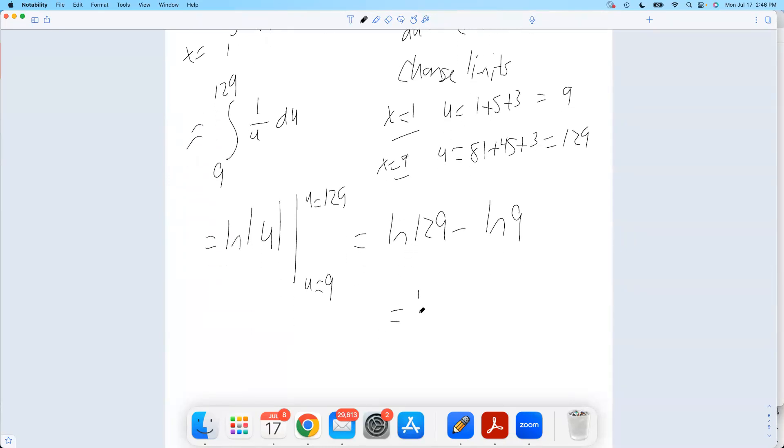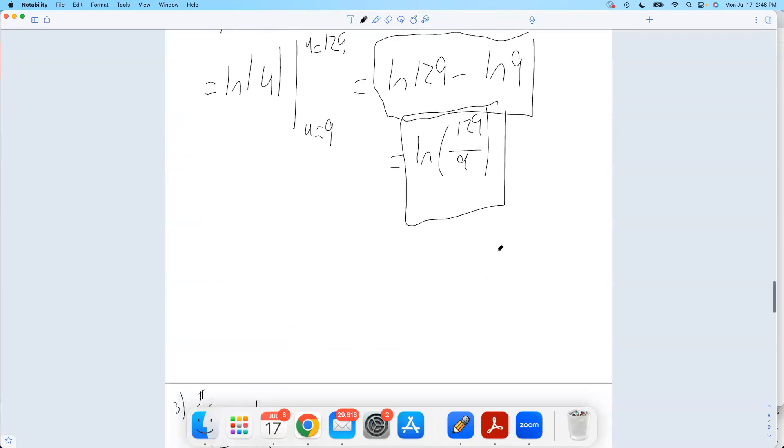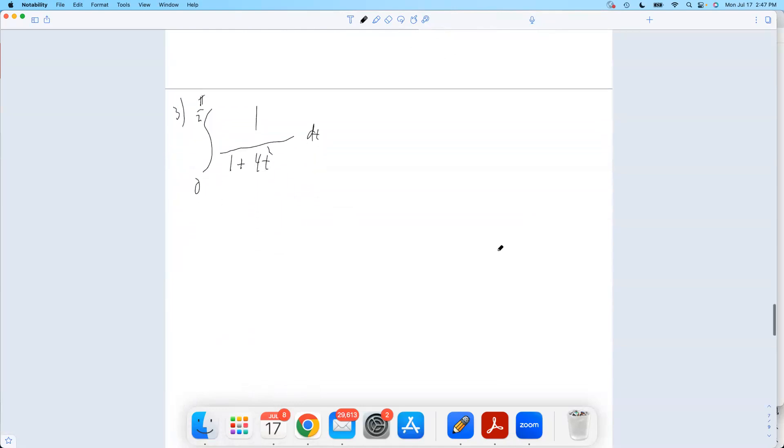So this would be natural log of 129 minus natural log of 9. Those are both positive, so I don't need the absolute value. And in fact, I could write that as a fraction if I wanted to. So this is a perfectly fine way to write it, or using rules of logs, I could write that. Okay, let's do another one.